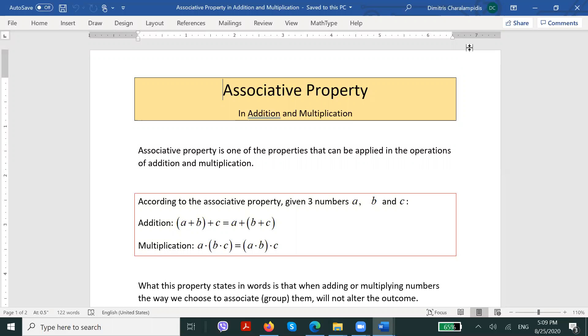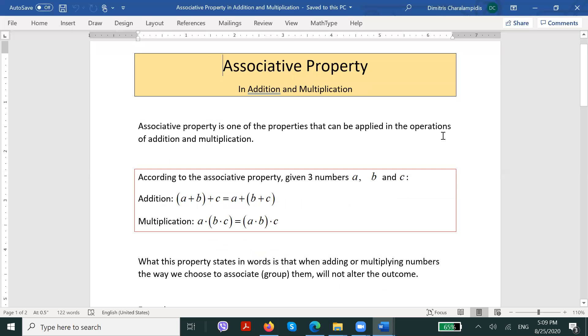What this property states in words is that when we add or multiply numbers, the way we choose to associate them, to group them, to create brackets, will not alter the total outcome.